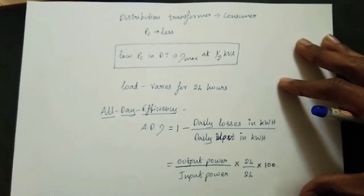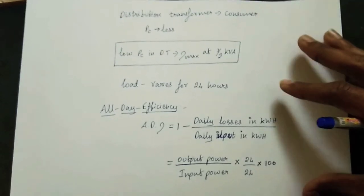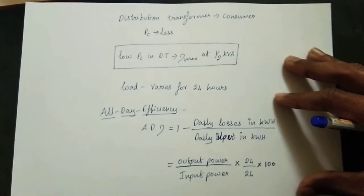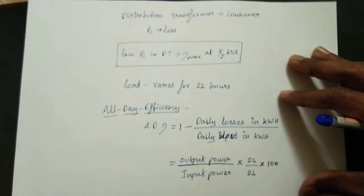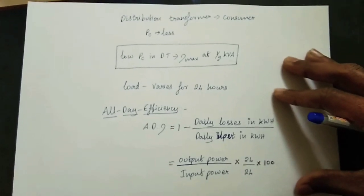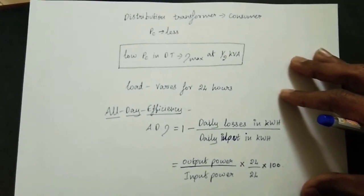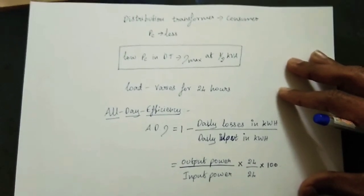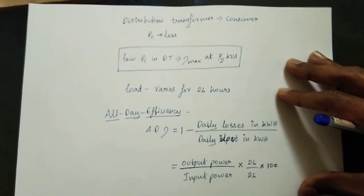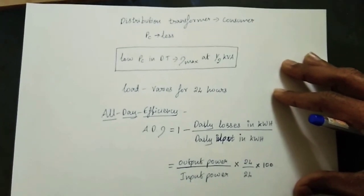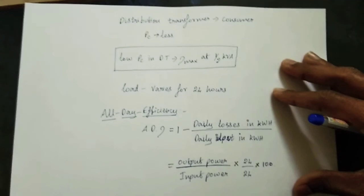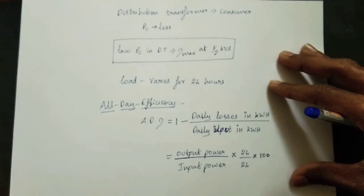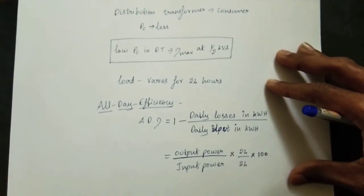The distribution transformer has core loss considerations. The core loss is always present. In power transformers, we aim for lower core loss. We can achieve maximum efficiency at half load. Full load efficiency is achieved in the distribution transformer. Power transformers are designed for full load efficiency, while distribution transformers are optimized for efficiency across varying loads.